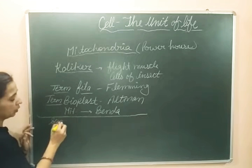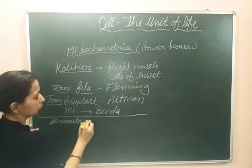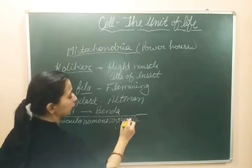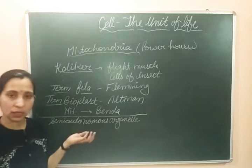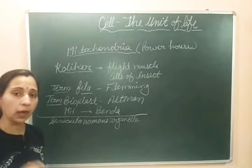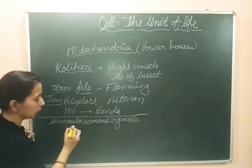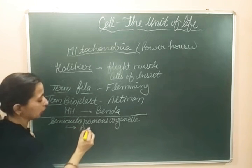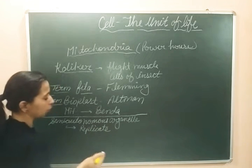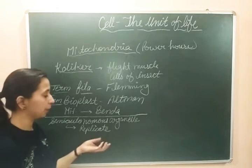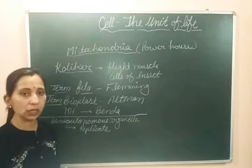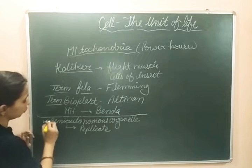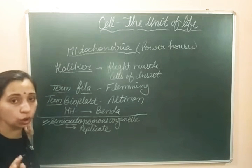Mitochondria is known as a semi-autonomous organelle. It is called semi-autonomous because it has its own DNA and ribosomes, making it able to do most activities itself. It can replicate, form its own copies, and even synthesize its own proteins. That is why it is known as a semi-autonomous organelle.